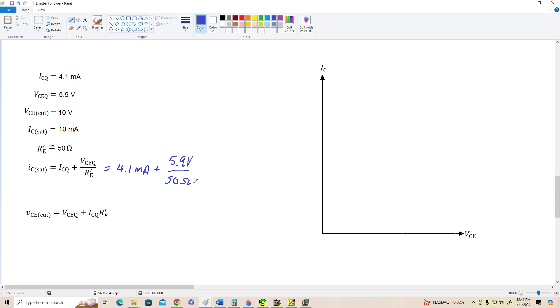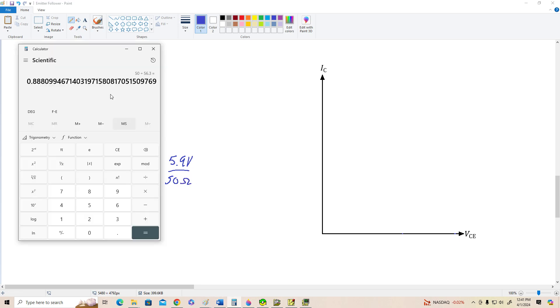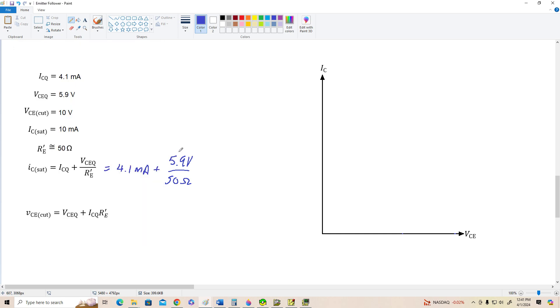And let's see what we've got here. 5.9 divided by 50 is 118 milliamps. So this term is 118 milliamps, 4.1 mils plus 118. Let's just call that about 120 milliamps. It's huge compared to everything else current-wise in this circuit. So that is going to be a problem.